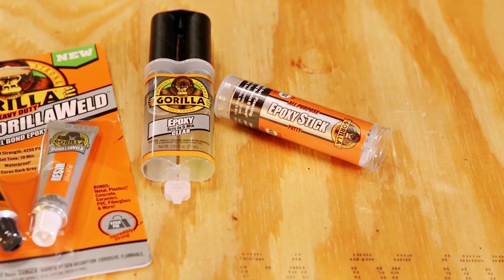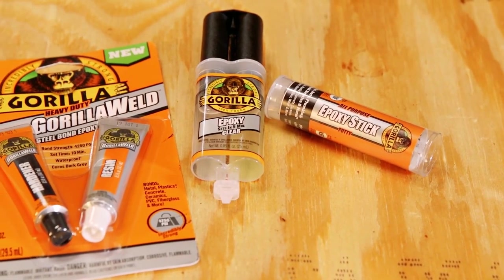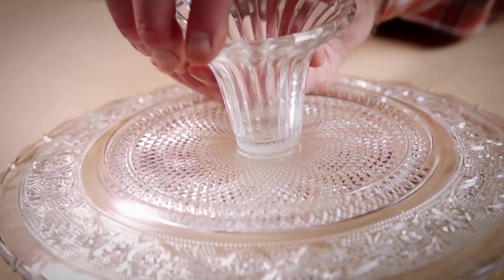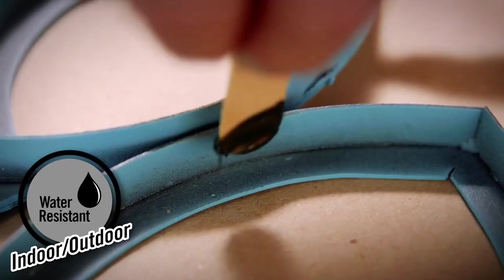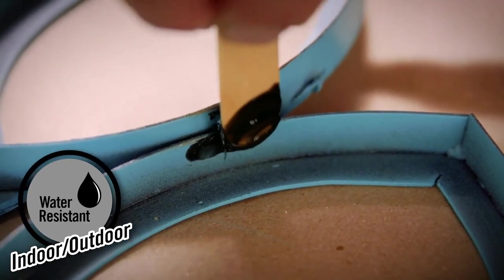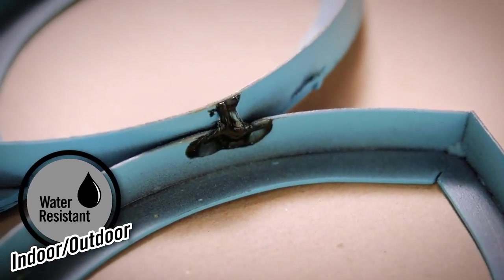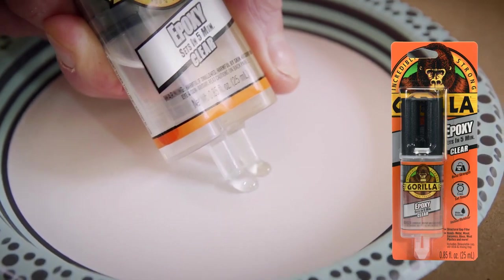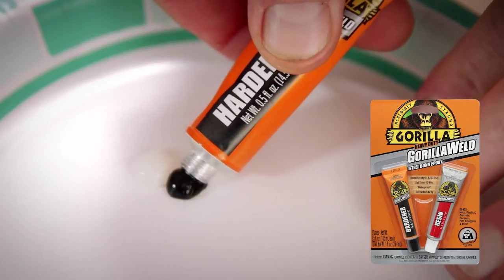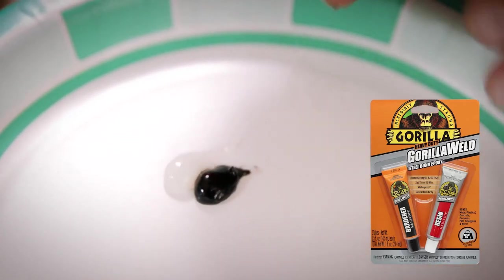Gorilla offers two premium epoxies, including the original Gorilla Epoxy that creates a strong, clear bond, and Gorilla Weld, a heavy-duty epoxy with incredible strength up to 4,250 PSI. Gorilla Epoxy is available in an easy-to-use syringe, while Gorilla Weld is available in traditional two-part tubes.